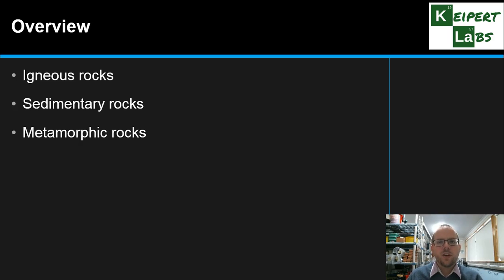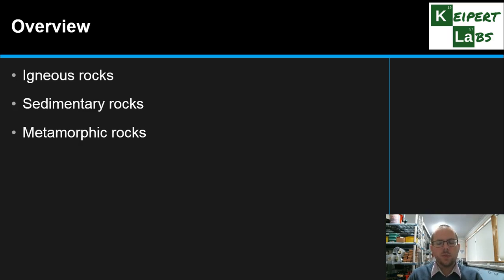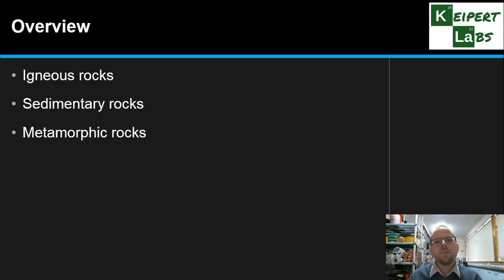The three types of rocks that we're going to be introduced to today are called igneous, sedimentary and metamorphic rocks. We're going to think about the context and where we would find each of these rocks, and then look at each of these types in detail to see how specialised they are.